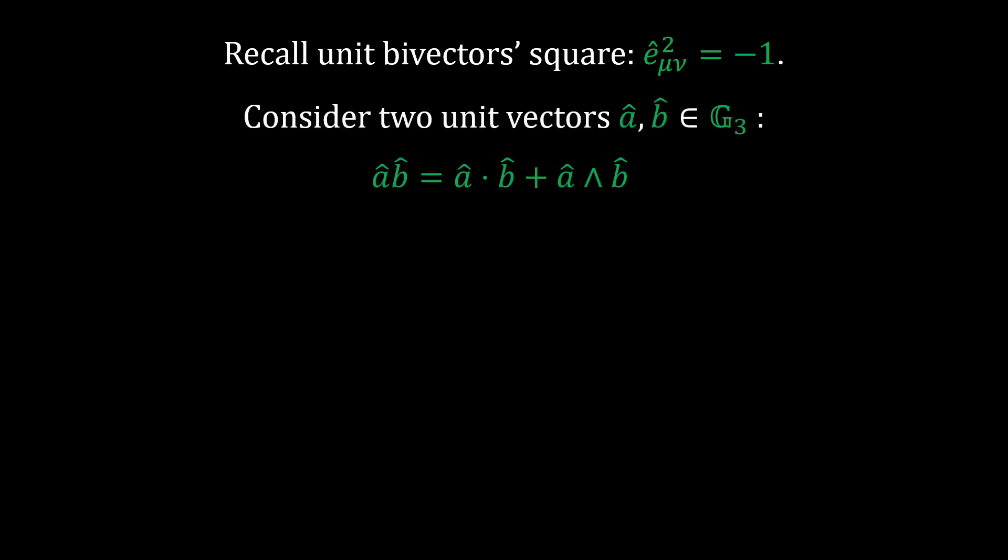Now consider the geometric product of two unit vectors A and B. We can substitute the dot and wedge products for their angle representations. The magnitude of A and B is 1, so this simplifies.